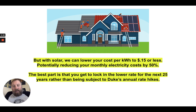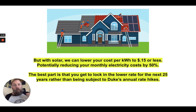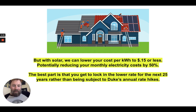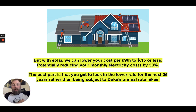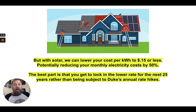If you're paying 22 cents per kilowatt hour now, over the next few years that could go to 25, 30, 35, 40, 60, even 90 cents. With solar, we can lower your rate to less than you're paying now and lock it in so you're no longer subject to the annual, inflationary rate hikes that are going to continue happening with Duke.